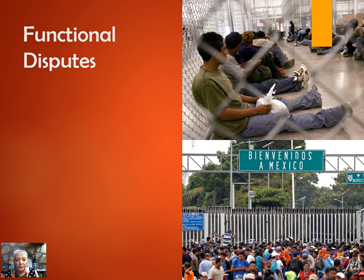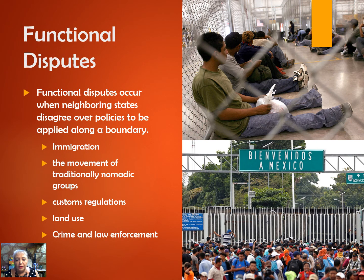Another type of dispute is called the functional dispute. Functional disputes are conflicts over policies — specifically, the national policies that each country applies at their border, known as immigration laws. Reasons for functional disputes include immigration or customs regulations. Some good examples are people needing a visa or papers to cross the border, as well as land use and location policies between neighbors — for example, locating landfills or polluting industries near the border.